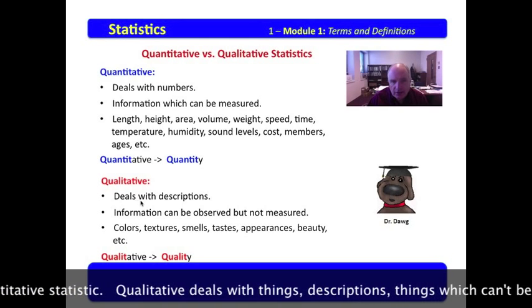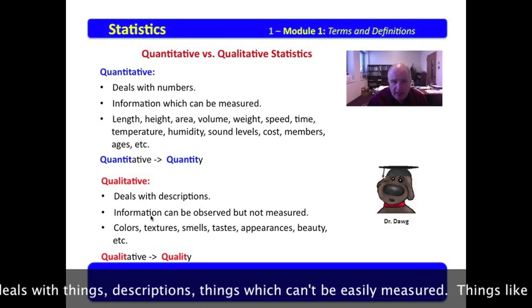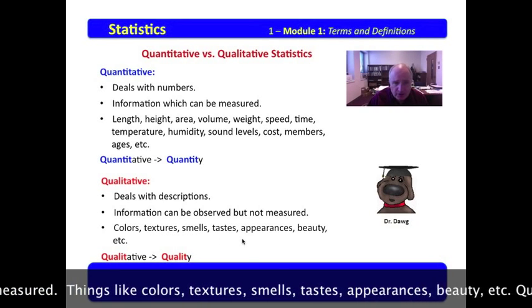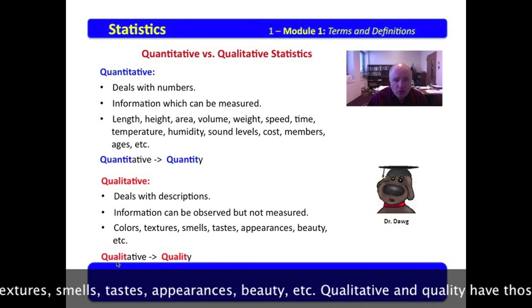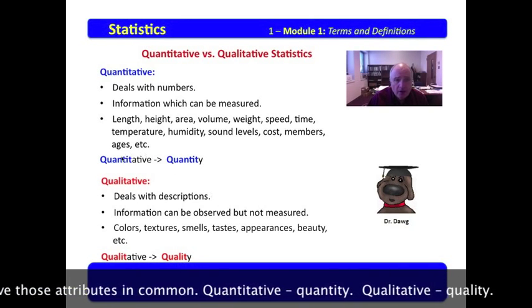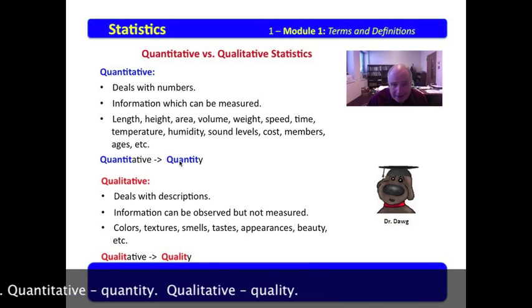Qualitative deals with things, descriptions, things which can't be easily measured, things like colors, textures, smells, tastes, appearances, beauty, etc. Qualitative and quality have those attributes in common. Quantitative, quantity. Qualitative, quality.